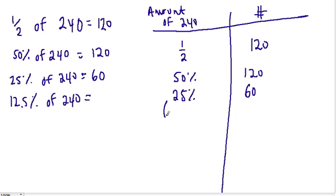If I take 25% and divide it by 2, I get 12.5%. And I take 60 and divide that by 2, I get 30. So 12.5% has to be 30.